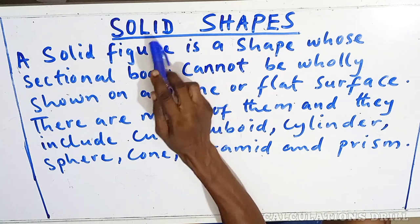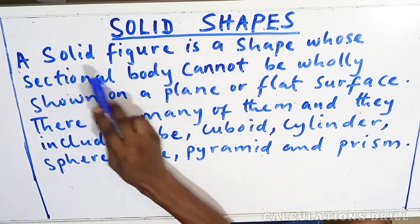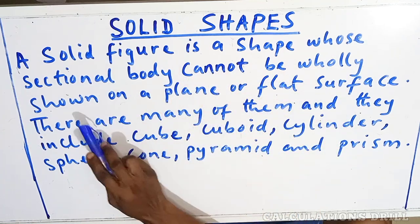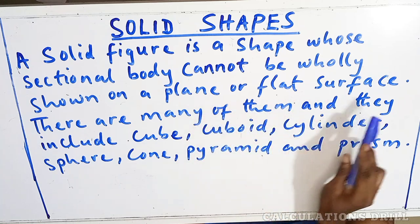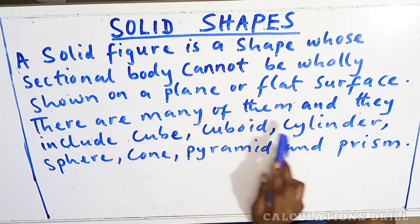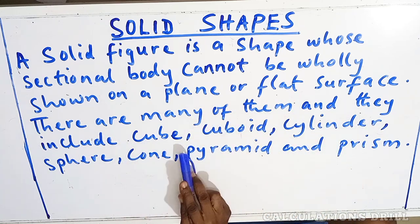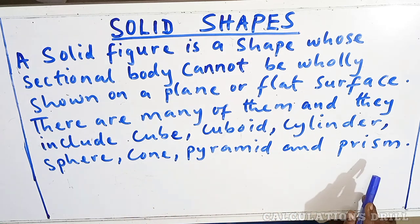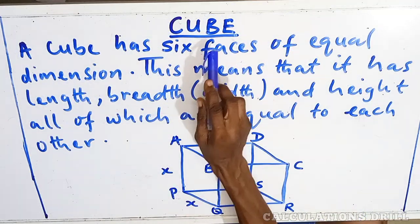Solid shapes. A solid figure is a shape whose sectional body cannot be wholly shown on a plane or flat surface. There are many of them, and they include cube, cuboid, cylinder, sphere, cone, pyramid, and prism. We are starting with the first one, cube.